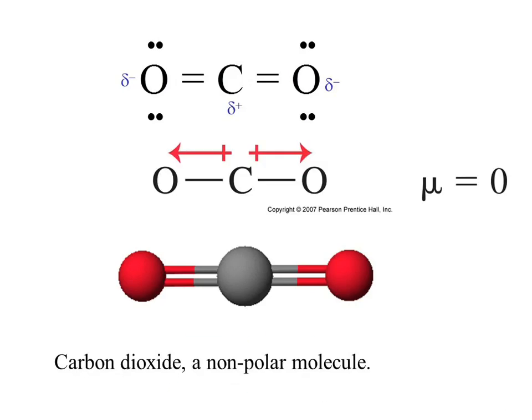If something is nonpolar, mu — the symbol for net dipole moment — equals zero. It has no net dipole moment; it's a wash. It has two dipoles — a dipole here and a dipole there — but they cancel each other out.